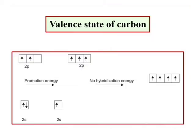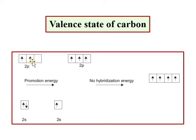Now let us look at the energy diagram for a particular element in its ground state. For carbon, the electronic configuration is 2s2 2p2. This is the ground state of carbon.